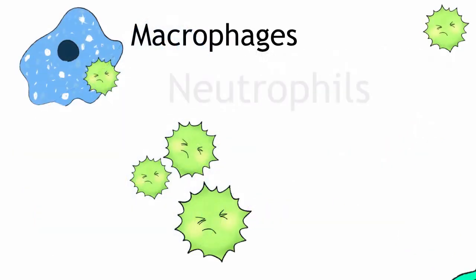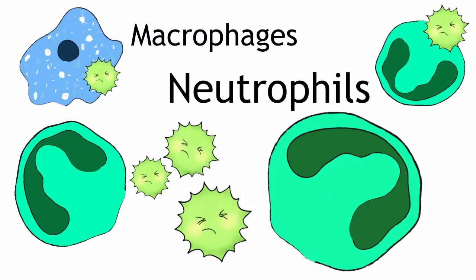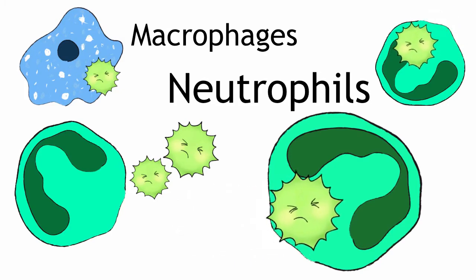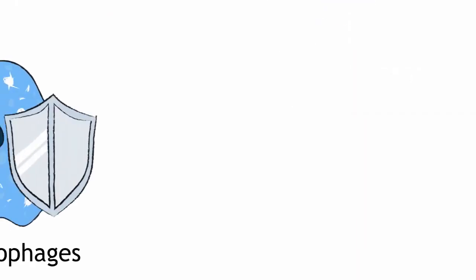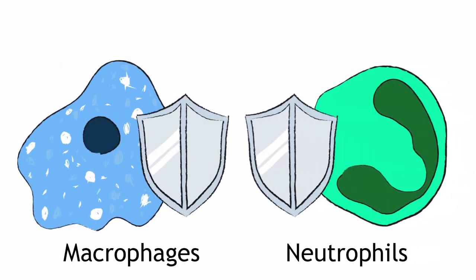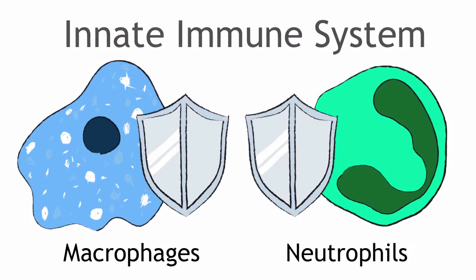Different immune cells, called neutrophils, are recruited to your leg and, with the macrophages, they help to destroy the bacteria. Both macrophages and neutrophils are part of the so-called innate immune system, and these cells are part of the first line of defense against invading pathogens.